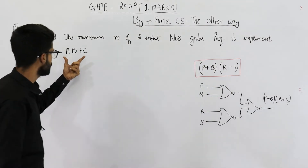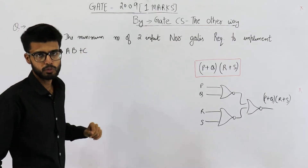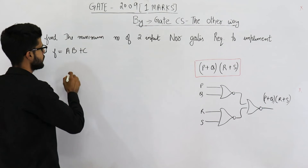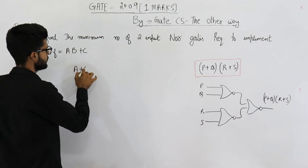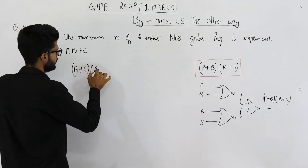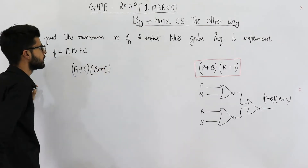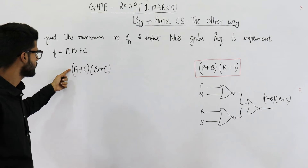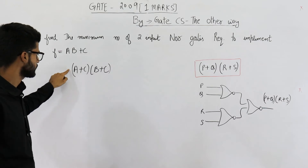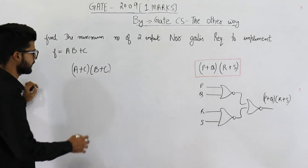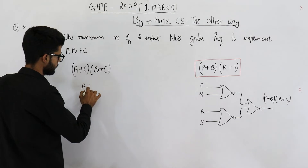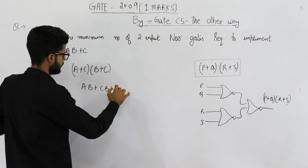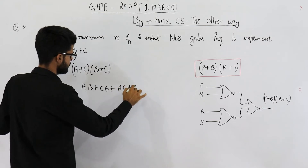Let's try to convert this SOP into POS. You can see that plus is distributive over dot, so we will get A plus C, into B plus C. If you have some doubt in this, you can just simplify it — you will get AB plus CB plus AC plus C back.